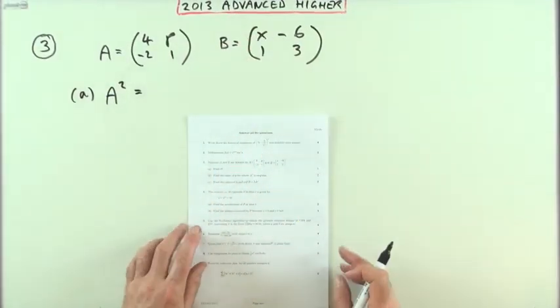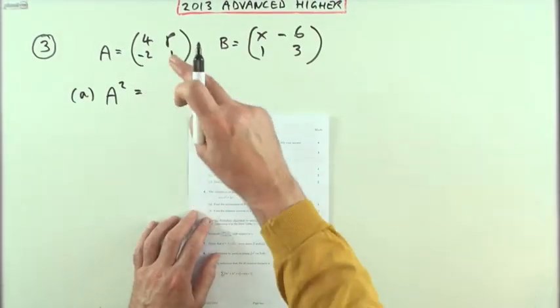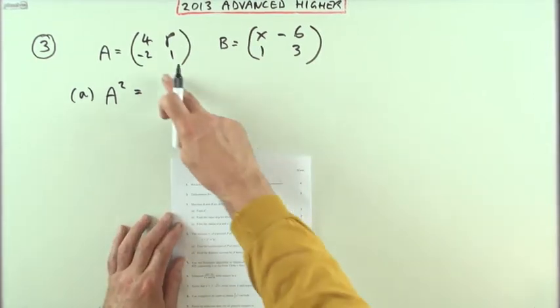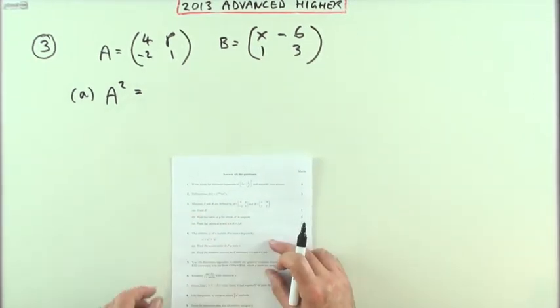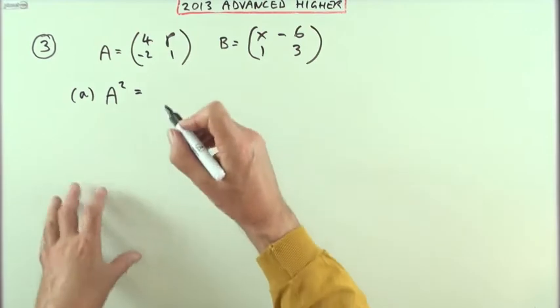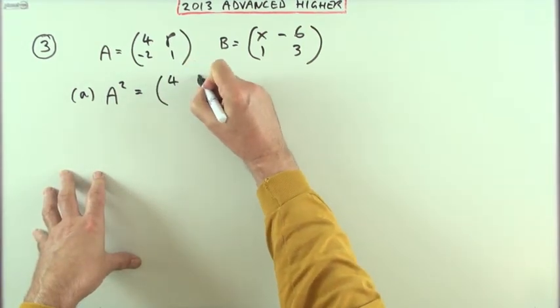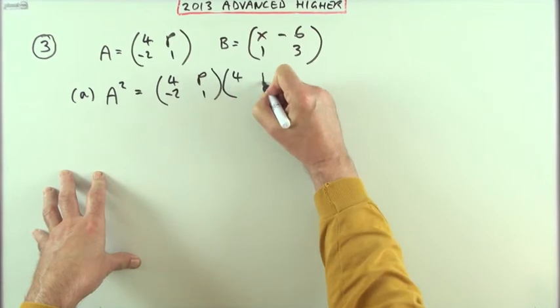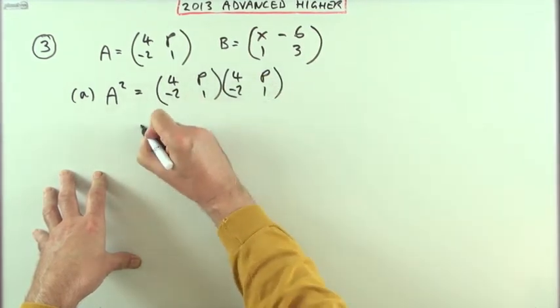Number three then from the 2013 Advanced Higher Maths, a matrices question with two by two matrices. First part is just what's A squared, so squaring that first matrix: 4p, negative 2, 1 times itself 4p, negative 2, 1.